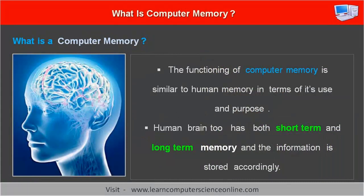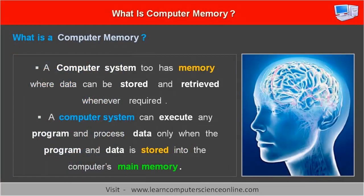We can also compare the computer memory with human memory. The functioning of computer memory is similar to human memory both in terms of its use and purpose. The human brain too has both short-term and long-term memory and the information is stored accordingly. A computer system too has memory where the data can be stored and retrieved whenever required. A computer system can execute any program and process the data only when the program instructions and the data are stored into the computer's main memory.